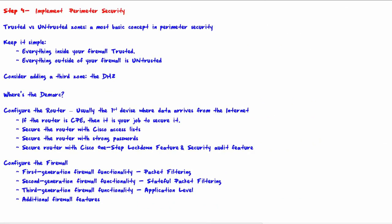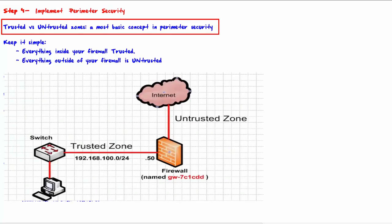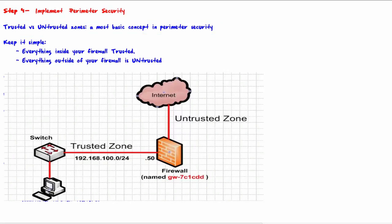Welcome to step 4: implement perimeter security - trusted versus untrusted zones. The most basic concept in perimeter security is the trusted versus untrusted zones. The trusted zone is everything inside your network, and the untrusted zone is anything outside of your network — that is the internet. Best practice demands there will be only one point on the perimeter where data packets can pass in and out. A firewall is placed at this single point to stand at the border and regulate what is allowed in and what is allowed out. Keep it simple: everything inside your firewall is trusted, everything outside your firewall is untrusted.